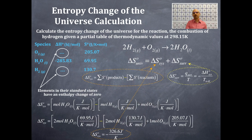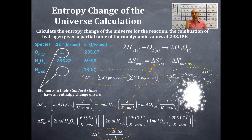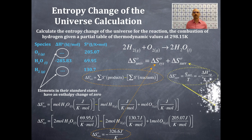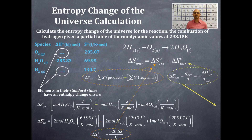This value of negative 326.6 J/K is delta S-naught for the system. Hold onto this number — we'll plug it into the equation delta S-naught universe equals system plus surroundings. Now we need to figure out the value for the surroundings on the next part.